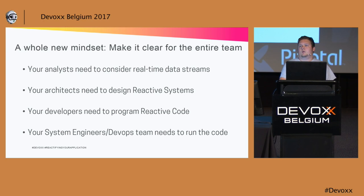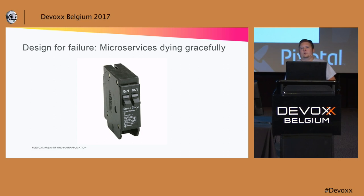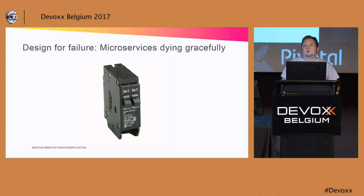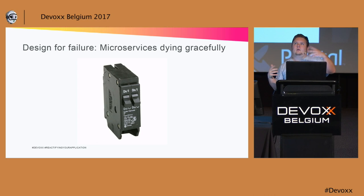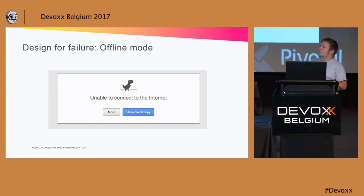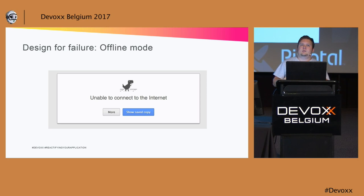It's also important to design for failure — that's really a big element of the reactive manifesto. There are quite a few libraries that enable these things; the Netflix stack is pretty great for them. Basically, it's important that if you use a microservice that dies, it does so in a graceful way, so your users still get quite a bit of functionality. Another way to see this is when you use an offline mode — you basically want your users to be able to deliver business value, and you could build an offline mode in your application.